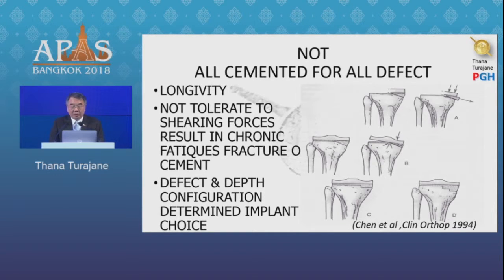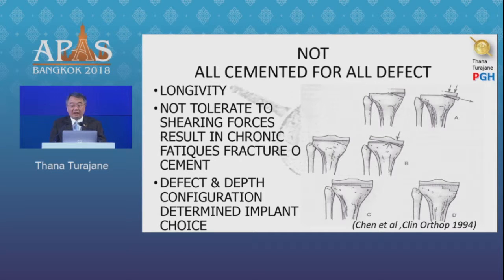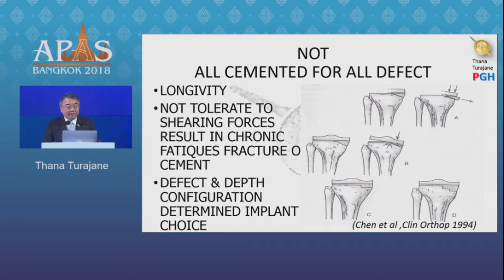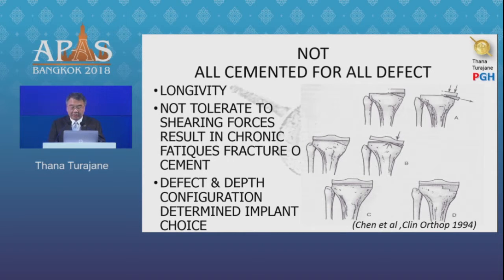Why do we not put cement for all defects that we see every day? Because, number one, it affects longevity. Number two, cement does not tolerate shielding forces well — it will fracture and lead to loosening, early loosening, and malrotation. The defect and its configuration will determine the implant choice.